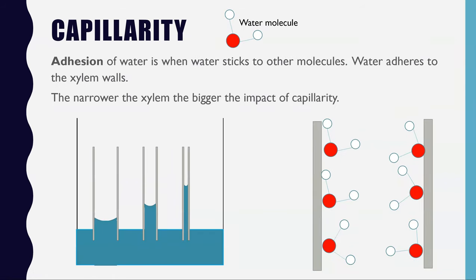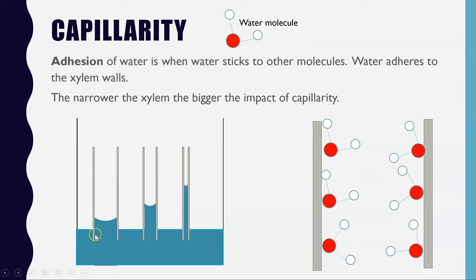Capillarity relates to the idea of adhesion — adhesion is when water molecules stick to the walls of the xylem. To demonstrate the impact of this, consider the analogy of drinking out of a straw. When you put a straw into water, the liquid does move up into the straw — it doesn't just stop where the straw starts. That is because adhesion is happening: the water molecules are sticking to the walls of the straw.